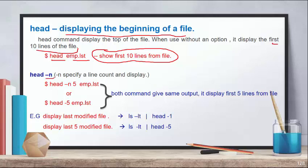You can use the minus N option with head. The minus N option is used for specifying the line count to display. For example, if you want to display the first 3, 5, or 50 lines, you use minus N. You can write this in two ways: head minus N 5, or directly head minus 5 — both commands give the same output and display the first 5 lines from the file.